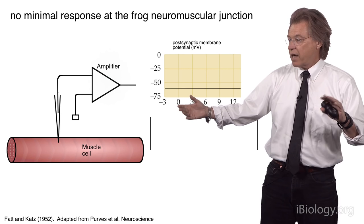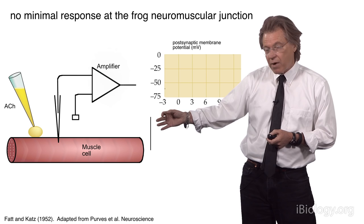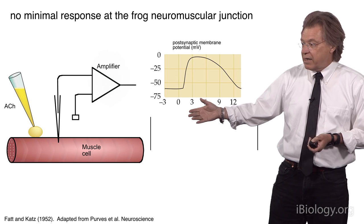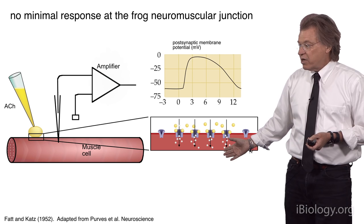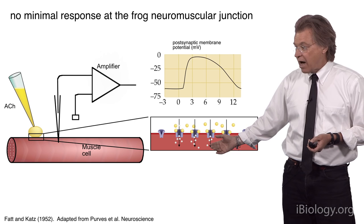He found that if he manipulated a pipette with acetylcholine and spritzed a little acetylcholine onto the muscle, he would see a profound depolarization. On the membrane of the muscle are acetylcholine receptors, so the acetylcholine molecules — shown in yellow — bind these receptors, which are ion channels. They open and allow cations to enter the cell, causing the depolarization.